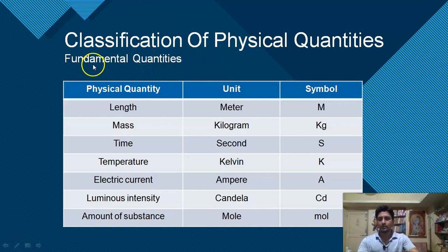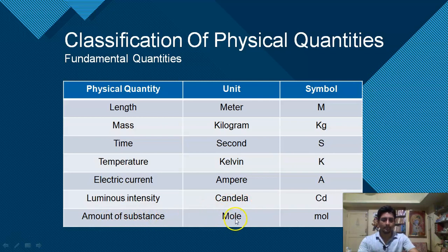Now let us look at examples. The seven fundamental quantities are: length (meter), mass (kilogram), time (second), temperature (Kelvin), electric current (ampere), luminous intensity (candela), and amount of substance (mole). You can also see the different kinds of symbols used for these physical quantities.